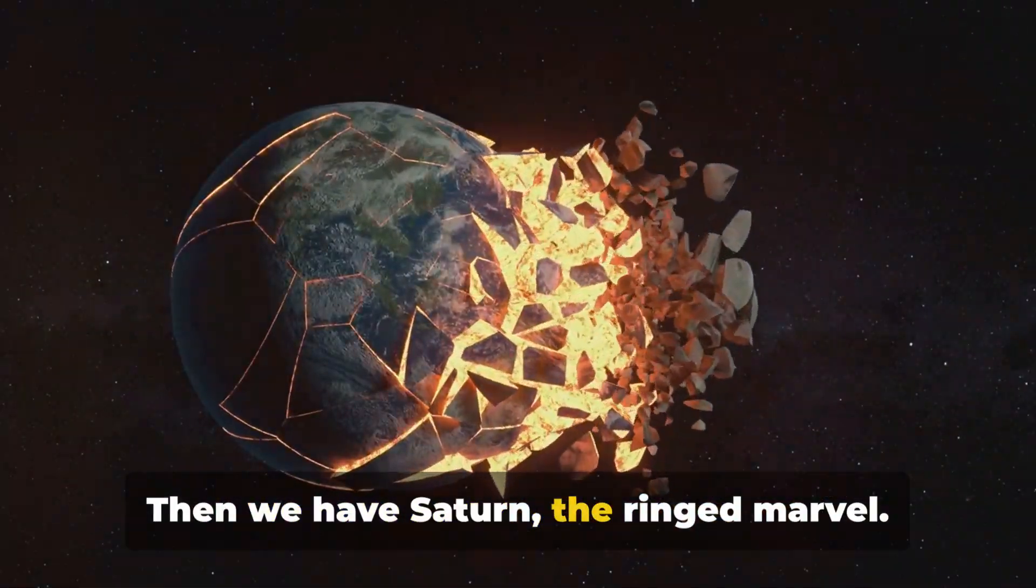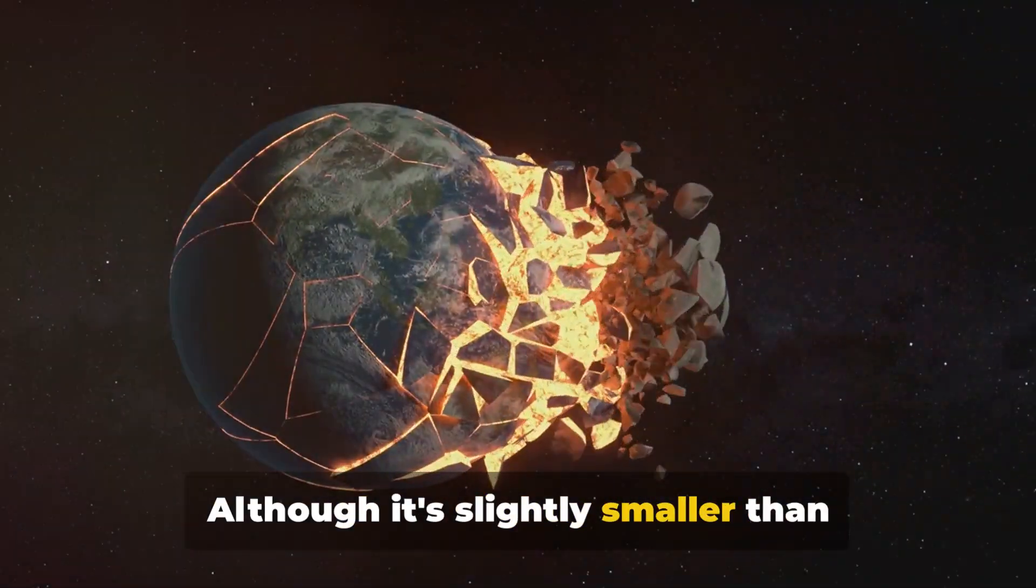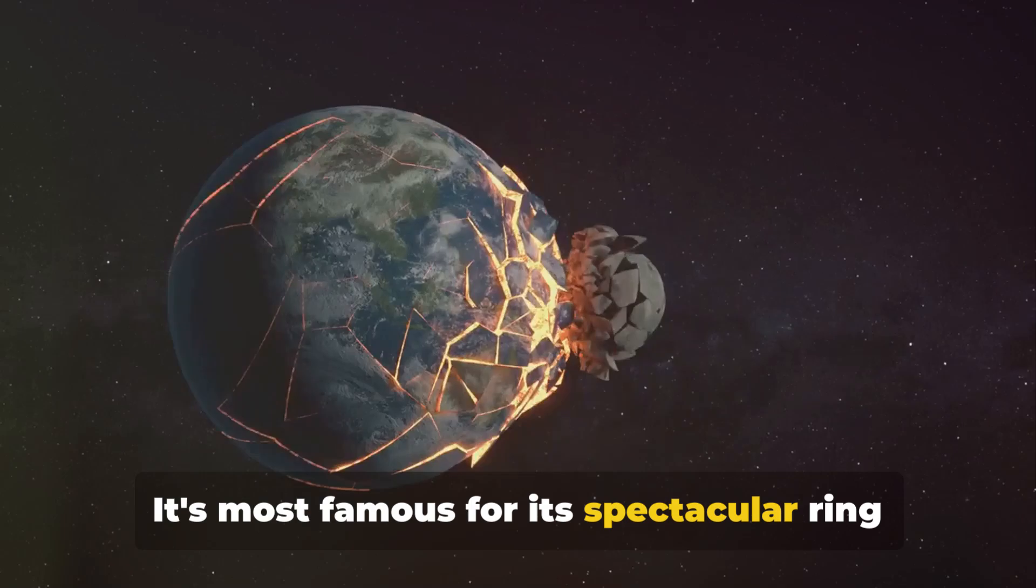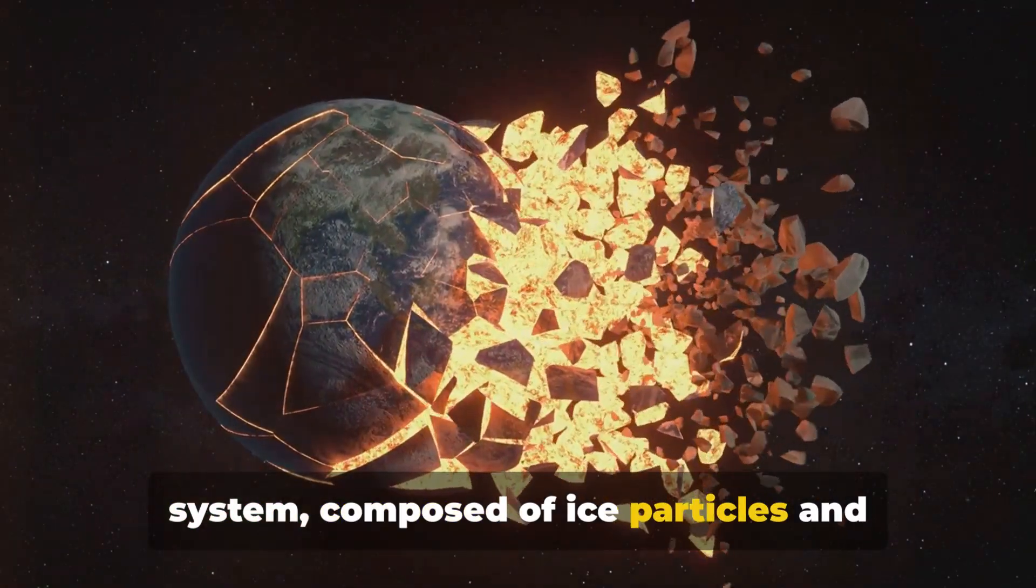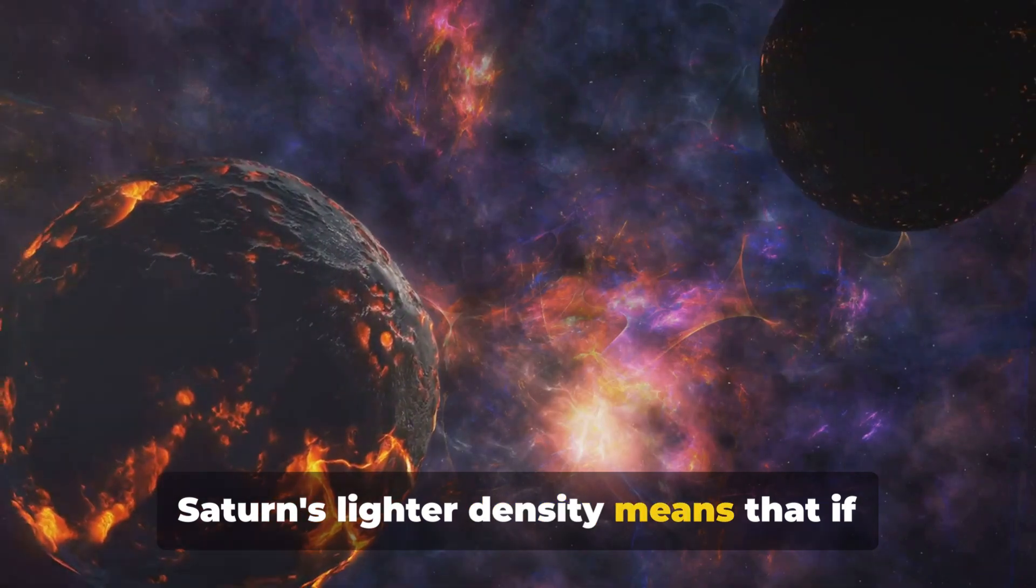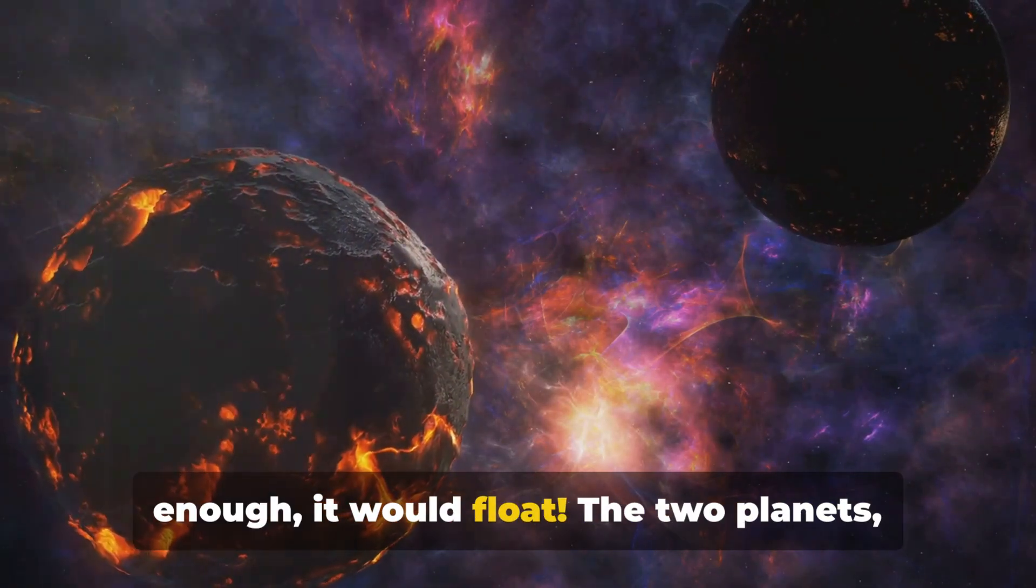Then we have Saturn, the ringed marvel. Although it's slightly smaller than Jupiter, Saturn is still about nine times the diameter of Earth. It's most famous for its spectacular ring system, composed of ice particles and rocky debris. Saturn's lighter density means that if you could somehow find a bathtub big enough, it would float.